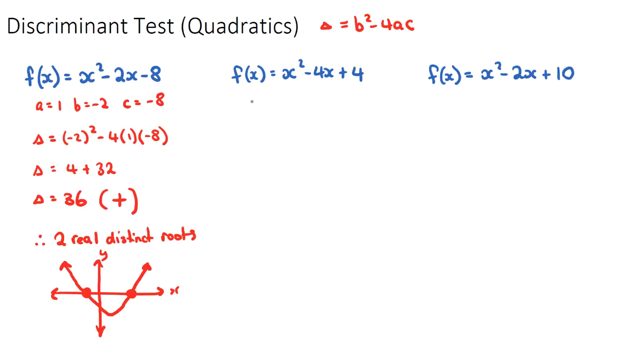Let's have a look at the second example. If we have our a is one, our b is negative four, and our c is four. If we apply our discriminant test, so negative four is our b squared minus four times a times c. Our discriminant will be 16 minus, and then this will be 16. So our discriminant will be equal to zero.